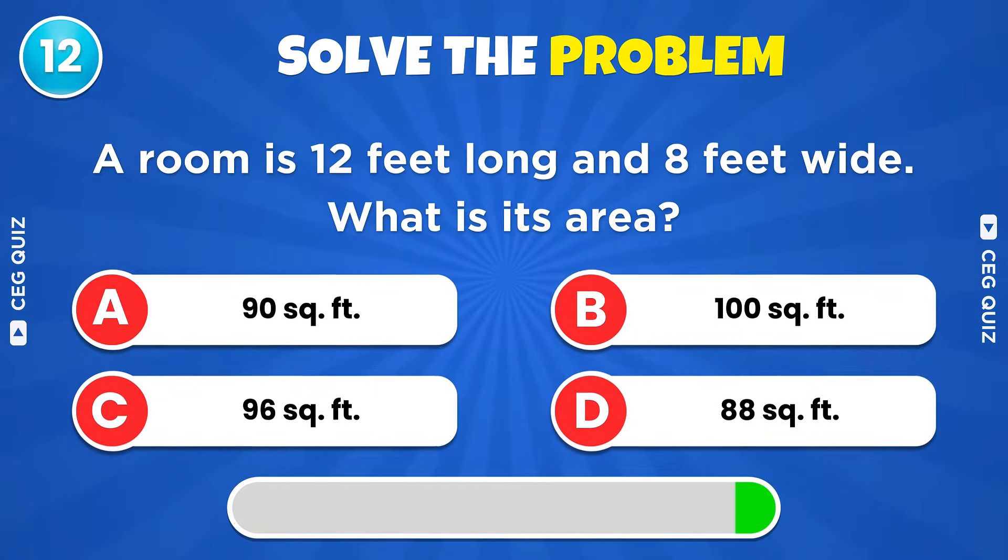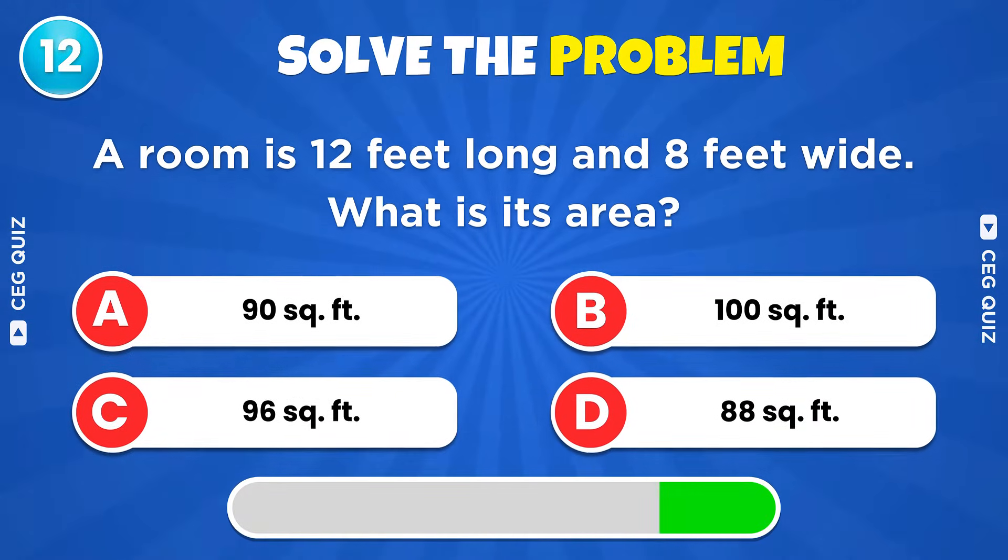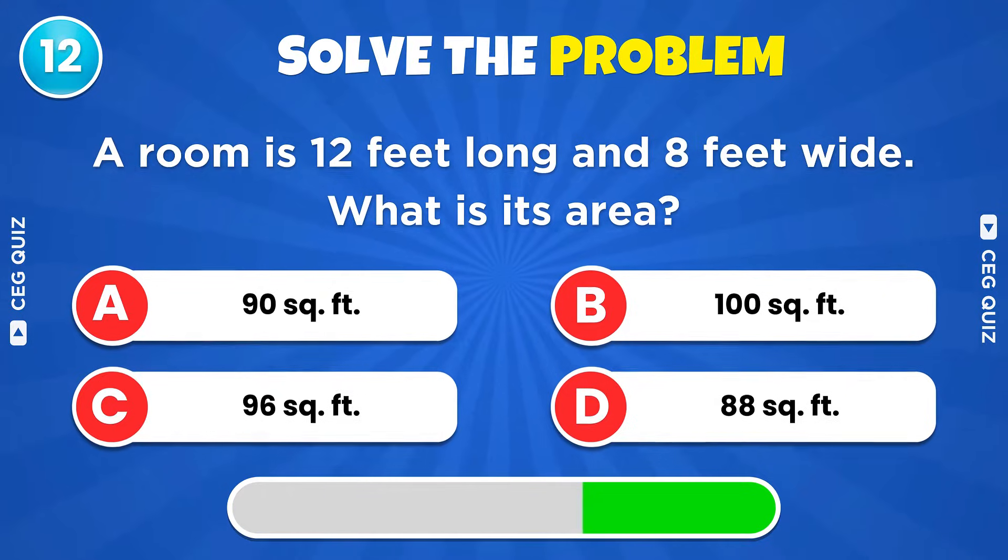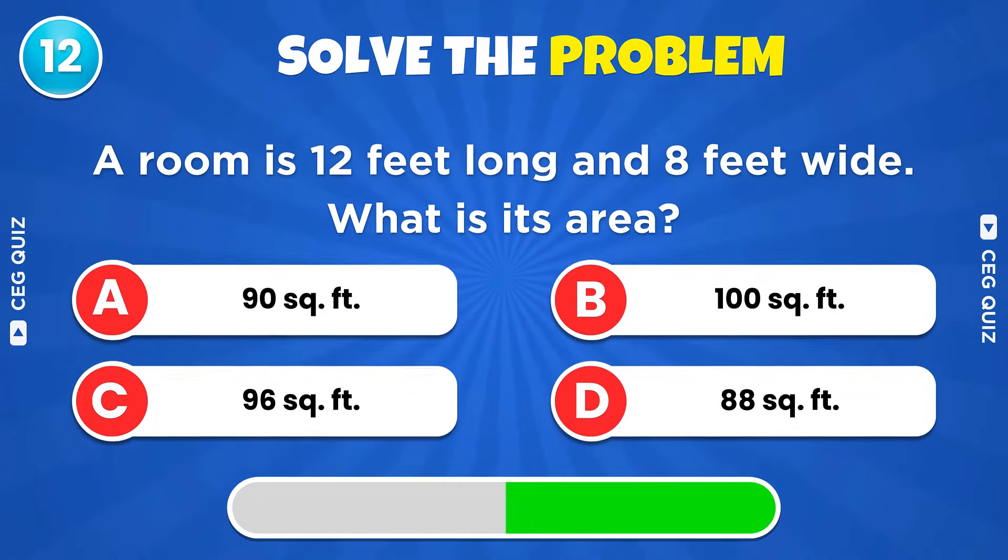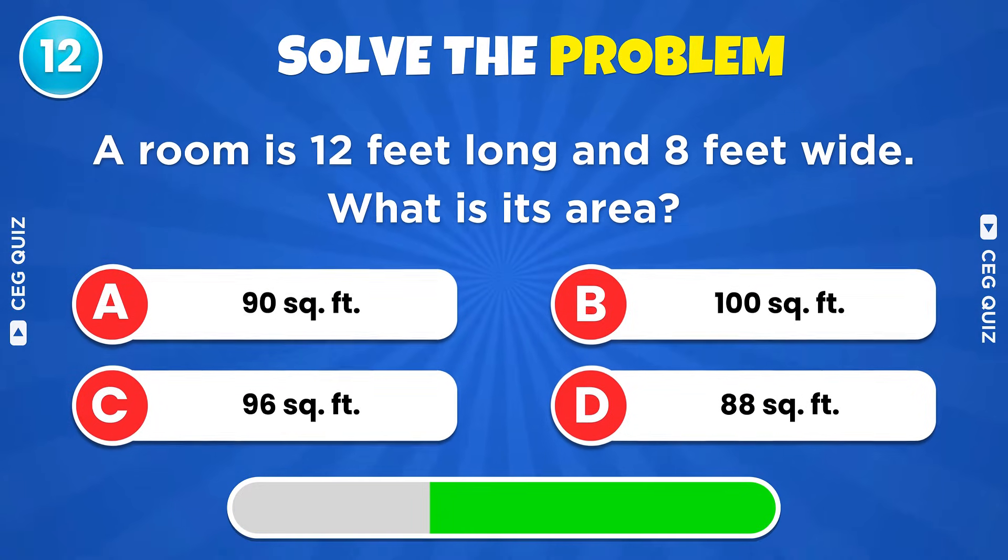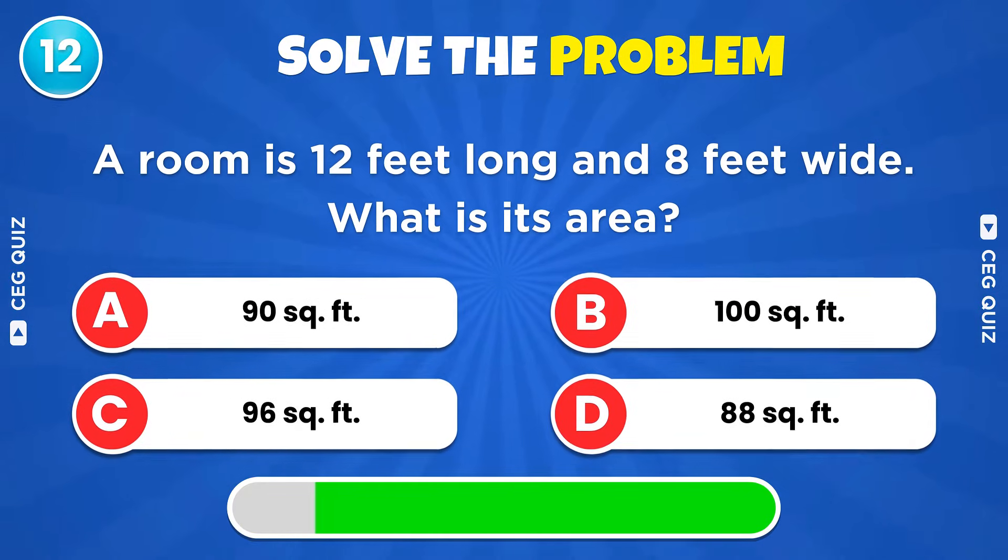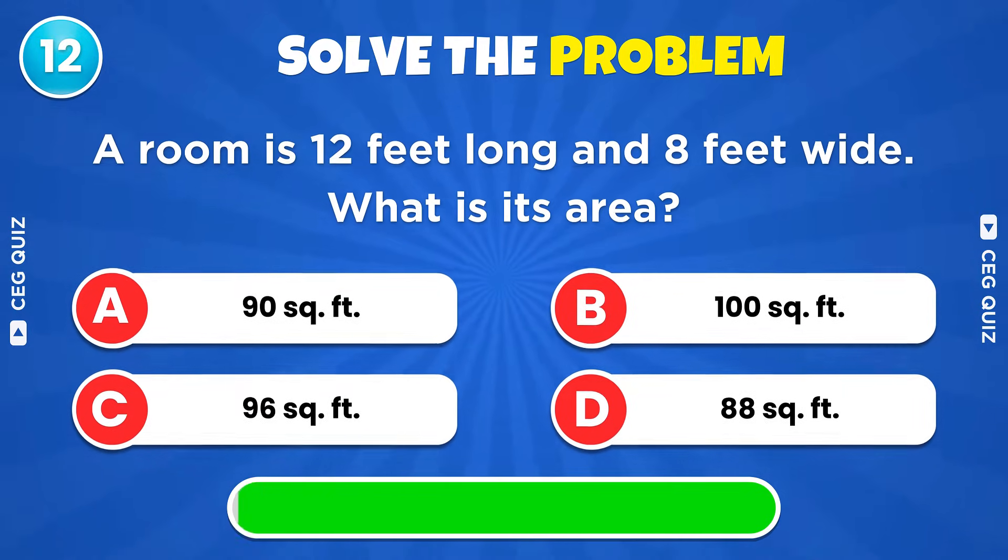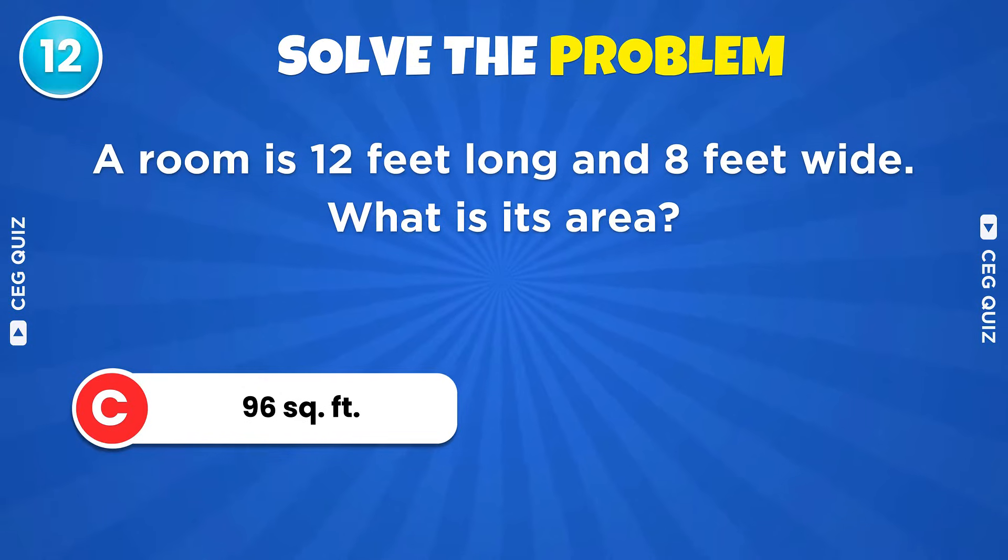A room is 12 feet long and 8 feet wide. What is its area? 96 square feet.